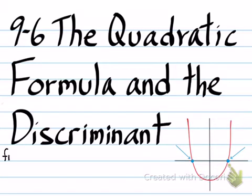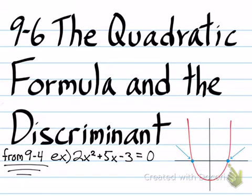In section 9-4, we got examples that looked like this, 2x squared plus 5x minus 3. This equation is going to form a parabola, and that parabola is going to have solutions. But since we don't have a graph, the method of figuring out the solutions is factoring.